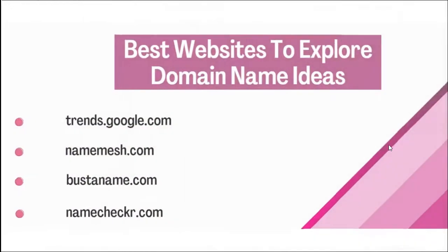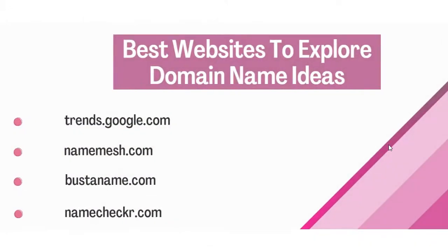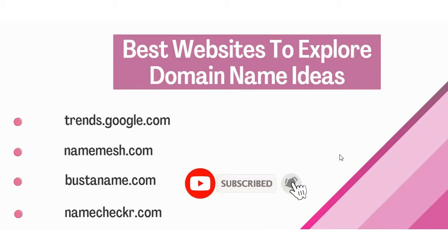There are plenty of different websites available where you can check out ideas, but the ones I found best for coming up with ideas were Google Trends, Name Mesh, Bust a Name, and Name Checker. All of these websites are free to use and they all have their own purpose when coming up with domain name ideas. For this example, I'll stick with the keyword 'vegan' and we'll go through all of these to see exactly what we're looking for.